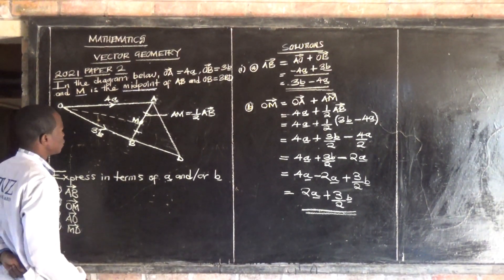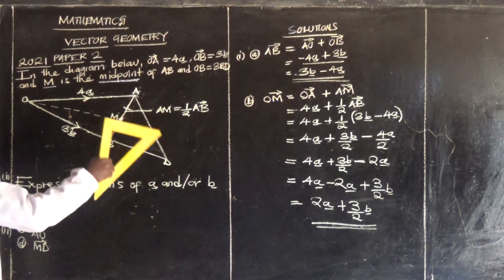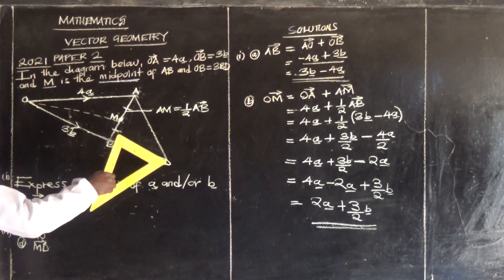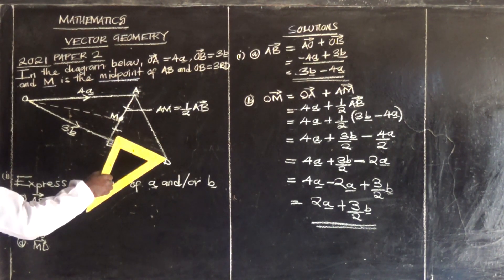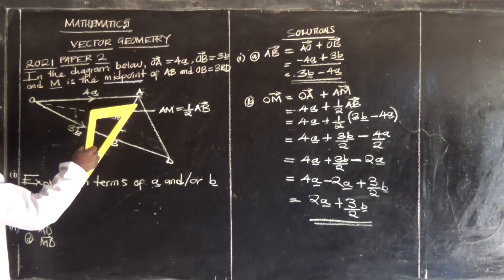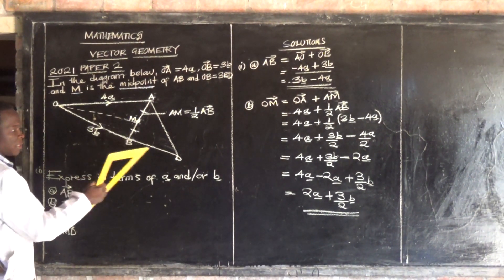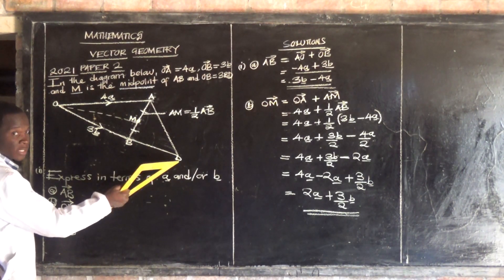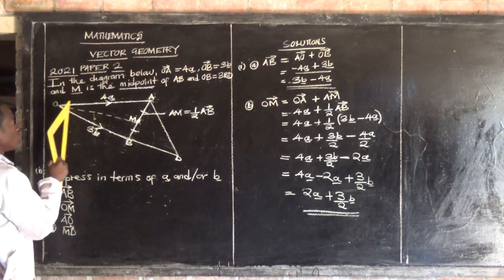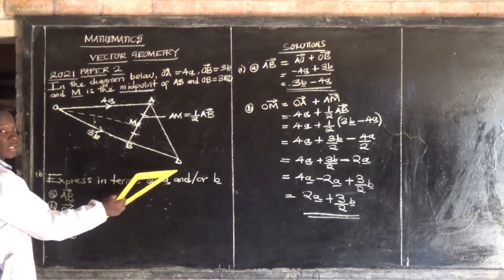Now we want AD — moving from A to D. You can say AO plus OD, alternatively AB plus BD. We will use AO plus OD. Is it okay?